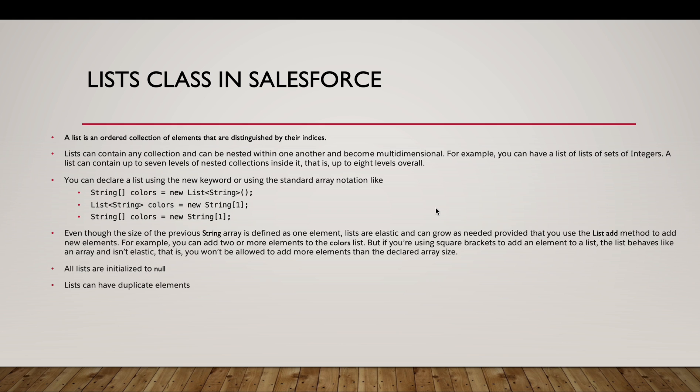All list variables in Apex are initialized to null by default. Lists can have duplicate elements — this is a key difference from sets, which cannot contain duplicate values.